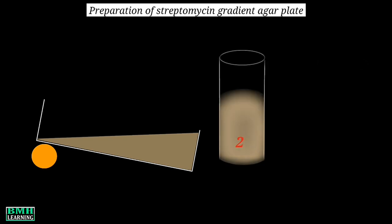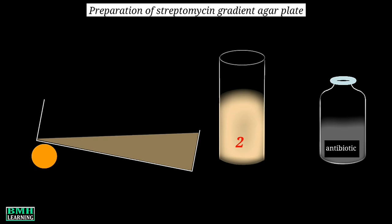We then take the second tube with molten agar along with our streptomycin solution. Using a sterile 1 ml pipette, 0.1 ml of the streptomycin solution is added into the second agar tube. The tube is rotated so that the antibiotic solution can be mixed with the agar, but you need to avoid making any bubbles.